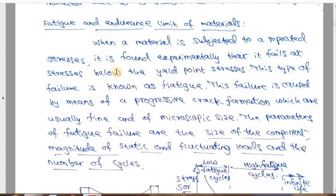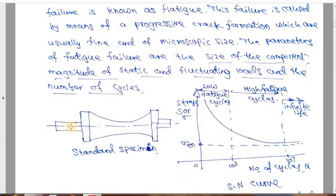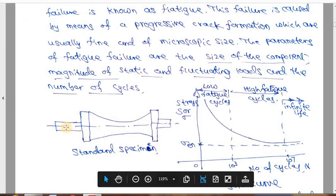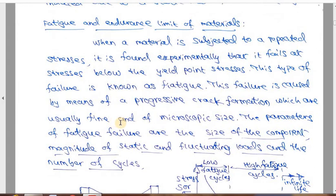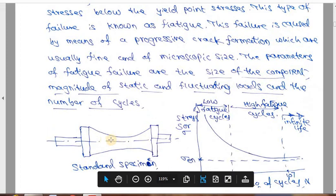There is an experimentation which uses a standard specimen for fatigue stress loading. This specimen is loaded in a simply supported configuration — one support here and another support there — with the specimen in between. This is a simply supported beam loaded at the centre. The beam is subjected to rotation; it is not a constant static beam. This is essentially a rotating shaft.